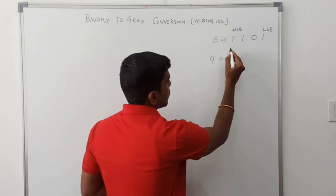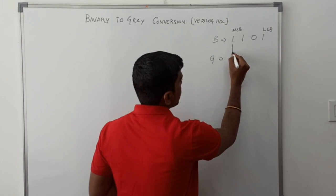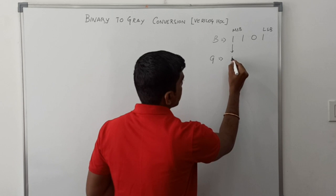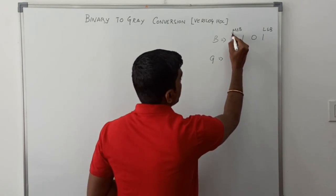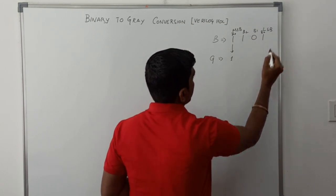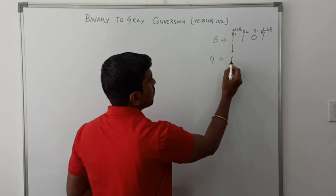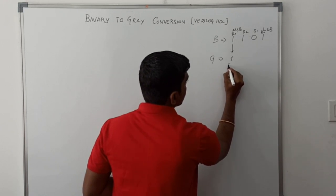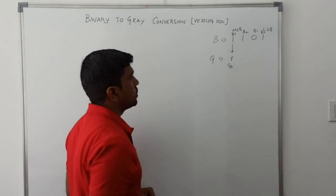In this procedure, first the MSB bit is kept as it is. So we have B3, B2, B1, B0. This B3 is kept as it is, so B3 represents G3.